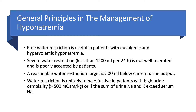Compliance with severe restriction is very poor and patients complain a lot. Personally, I do 1,400 ml and rarely go beyond that, and yet I get numerous complaints. A reasonable water restriction target is 500 ml below current urine output. You have to understand that water restriction alone is unlikely to be effective if urine osmolality is above 500 mOsm/kg of water, or if the sum of urine sodium and potassium exceeds serum sodium — meaning the patient is concentrating urine and retaining water.